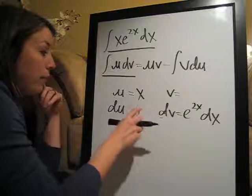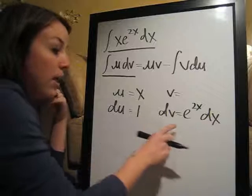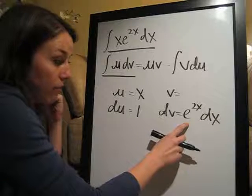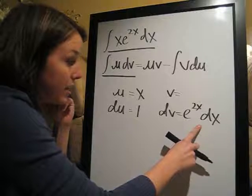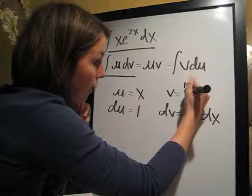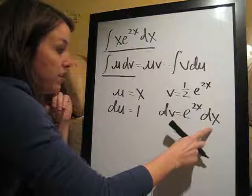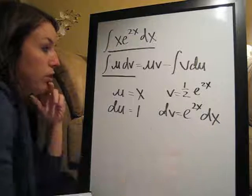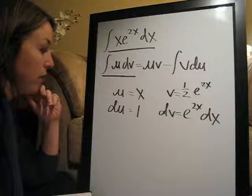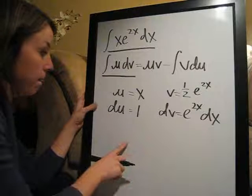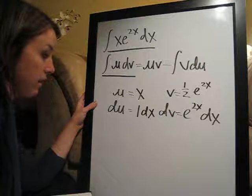So once we've done those, we go ahead and take the derivative of u. So here it's 1. And then we're going to take the antiderivative, or the integral, of e to the 2x dx. And when we take the integral of that, we're going to get 1 half e to the 2x, and the dx goes away. This is going to be dx here as well.